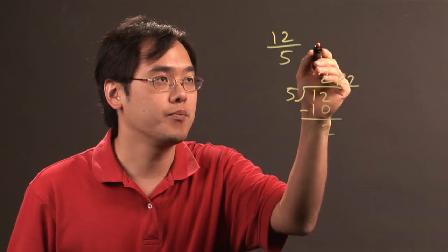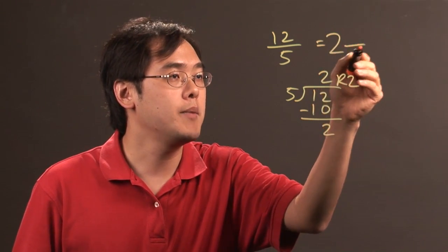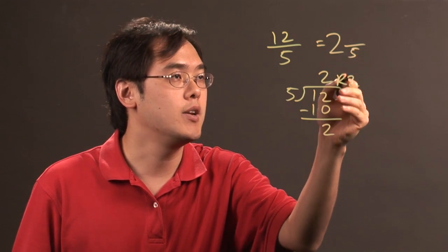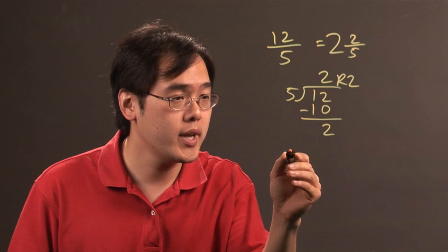Now to convert this to a mixed fraction, you write the whole number, which is 2, and then keep the denominator, which is 5, and then write the remainder there. So 12 fifths is like 2 and 2 fifths.